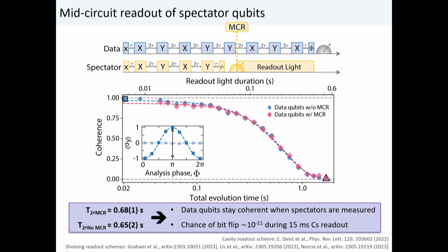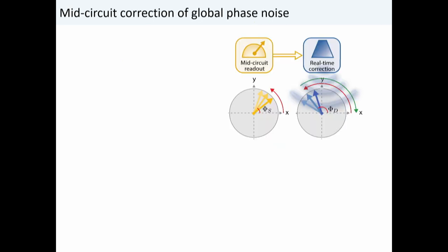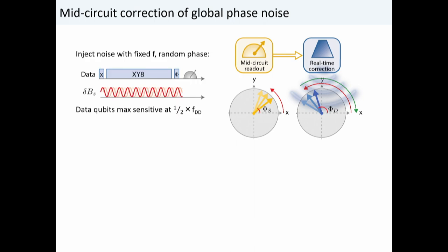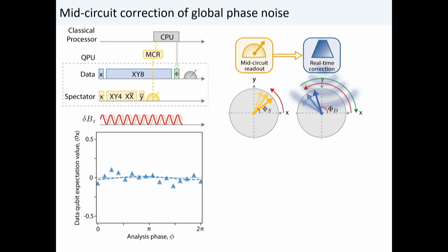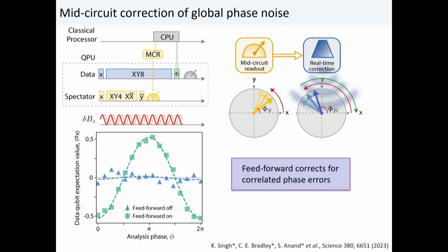Now we have a good mid-circuit measurement, so we set out to do a spectator qubit protocol. We controllably injected magnetic field noise with a random phase into our processor — so on any given shot, we can't correct for it in post-processing. This completely decoheres our rubidium qubits. Then we introduce the cesium qubits, let them sample the same noise, measure on every shot, use that measurement to infer the phase the rubidium atoms accrued, and then correct it. We find we can completely recover the coherence of the rubidium atoms. This feed-forward corrects for correlated phase errors on data qubits, and this methodology is broadly applicable to all quantum computing platforms.